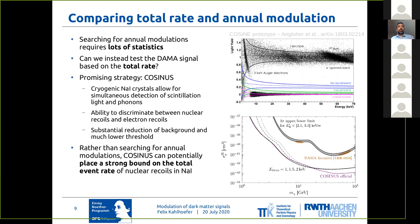By detecting both scintillation light and phonons, you obtain the ability to discriminate between nuclear recoils and electron recoils. So potentially this should lead to a very substantial reduction of background as well as a lower threshold, and raises the interesting question of how you would use that to test the DAMA modulation hypothesis.